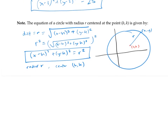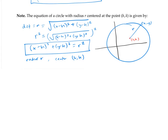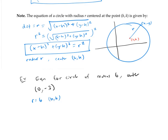If you remember this general formula, that makes it easy to write down the equation for a circle. For example, if we want the equation for a circle of radius six and center at zero, negative three, then r equals six and h, k is zero, negative three. Plugging into the formula, we get x minus zero squared plus y minus negative three squared equals six squared, or simplified, x squared plus y plus three squared equals 36.